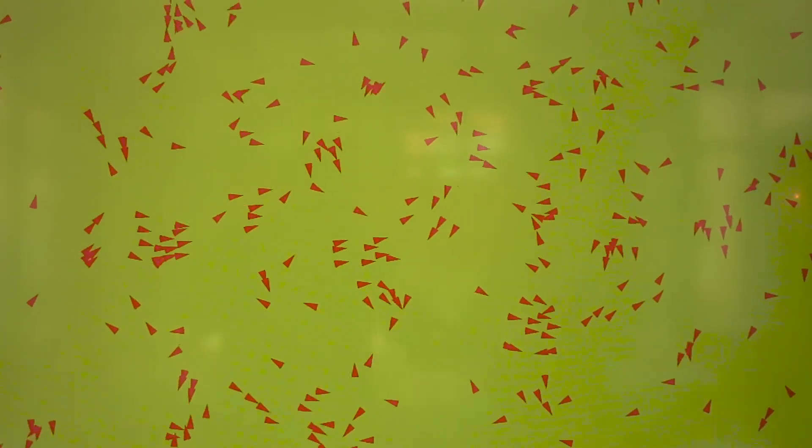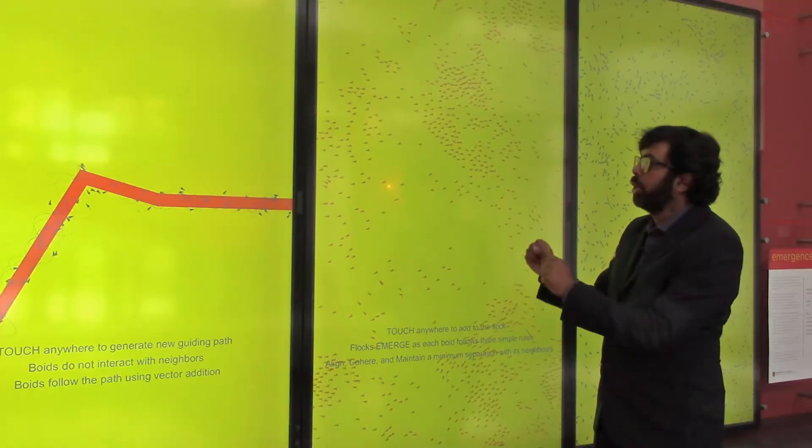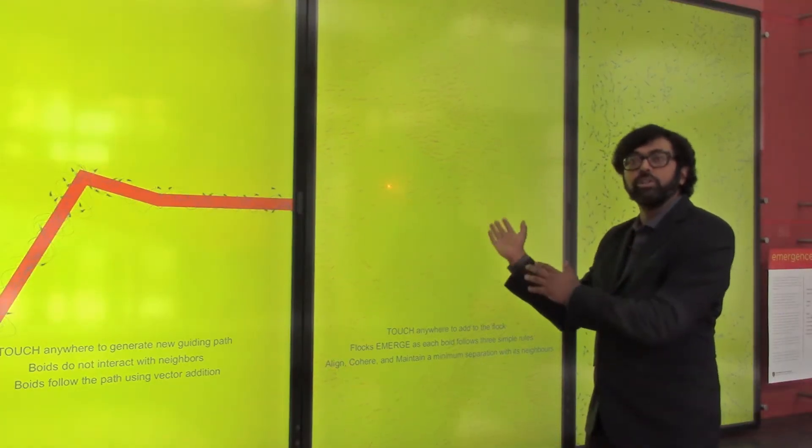So in this particular simulation what we are seeing are these red triangles. They are all interacting with other triangles immediately surrounding them through simple interactions like they are trying to avoid other neighbors reaching them within a certain distance. They are trying to align and then cohere with other neighbors too.